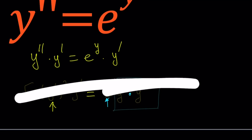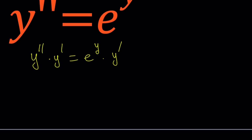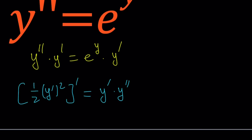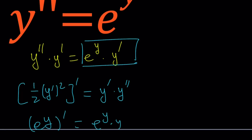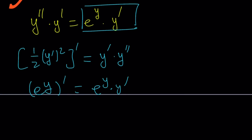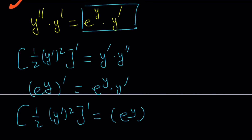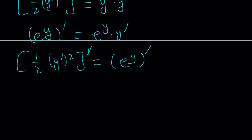If you differentiate one half of y prime squared, then you get y prime times y double prime because the 2 cancels out. And if you differentiate e to the power y, you get e to the y times y prime from the chain rule. So we have the derivative of one half y prime squared equals the derivative of e to the y. Since we have the derivative of something equals the derivative of something else, we can integrate both sides.